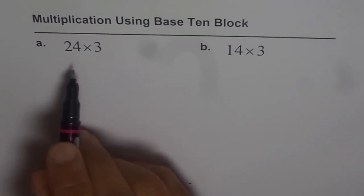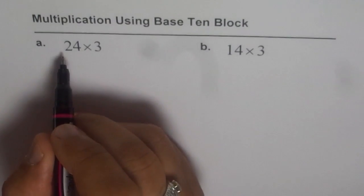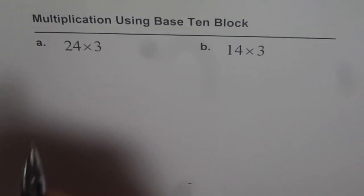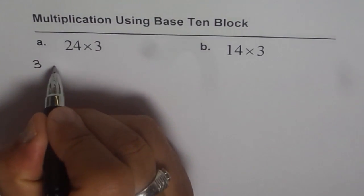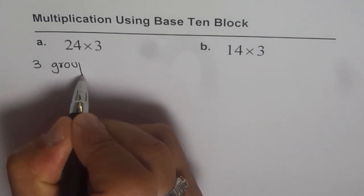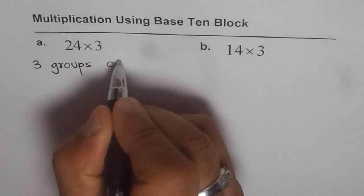Okay, this one is kind of tricky. Let's do it. 24 times 3 really means what? It means 3 groups, right? 3 groups of 24.